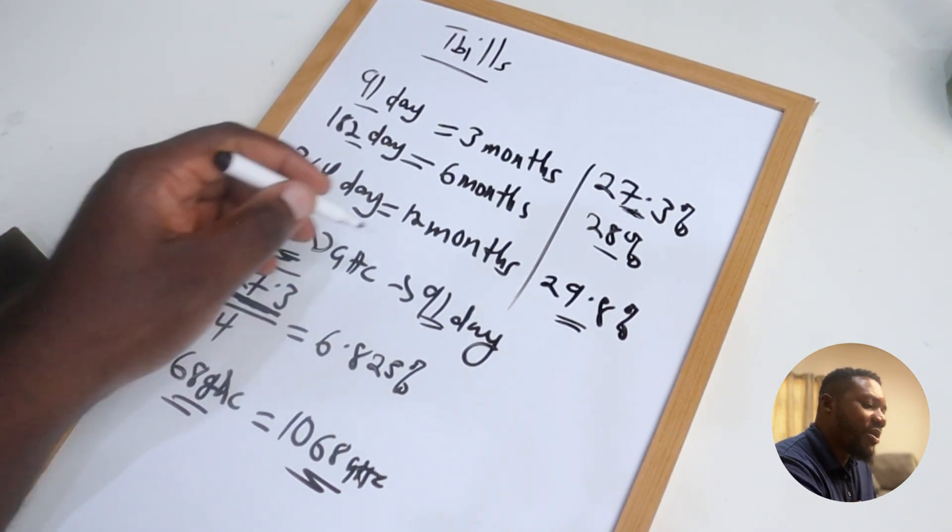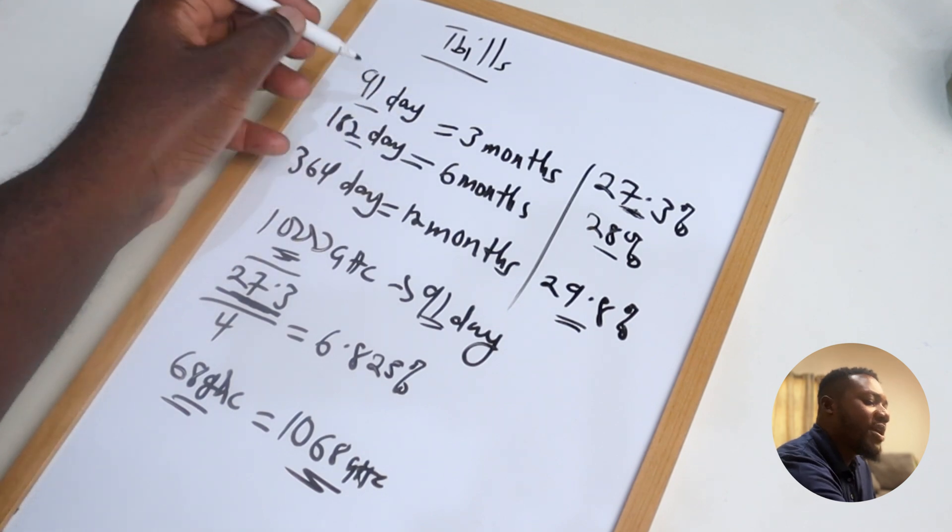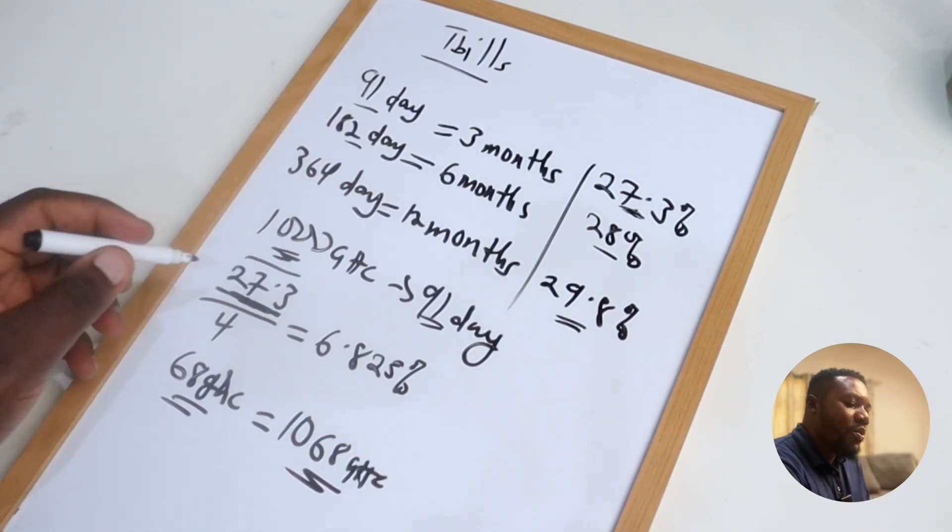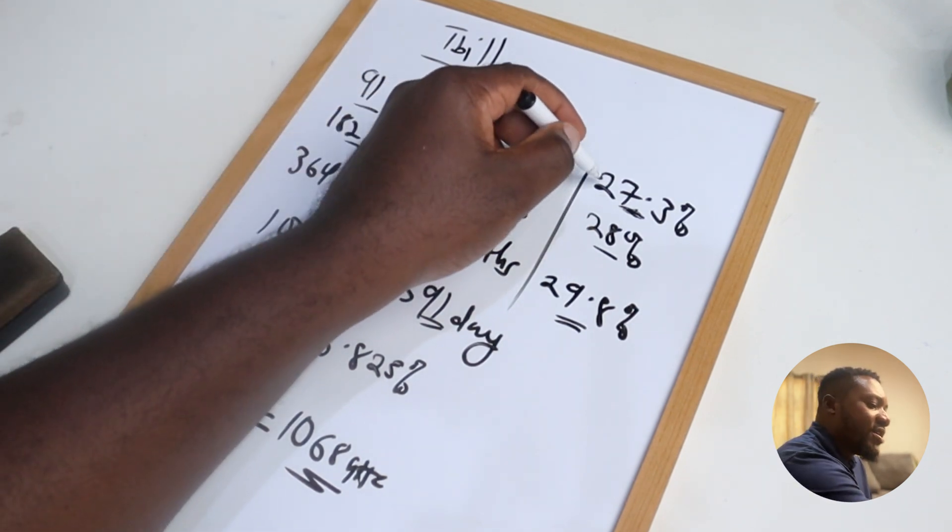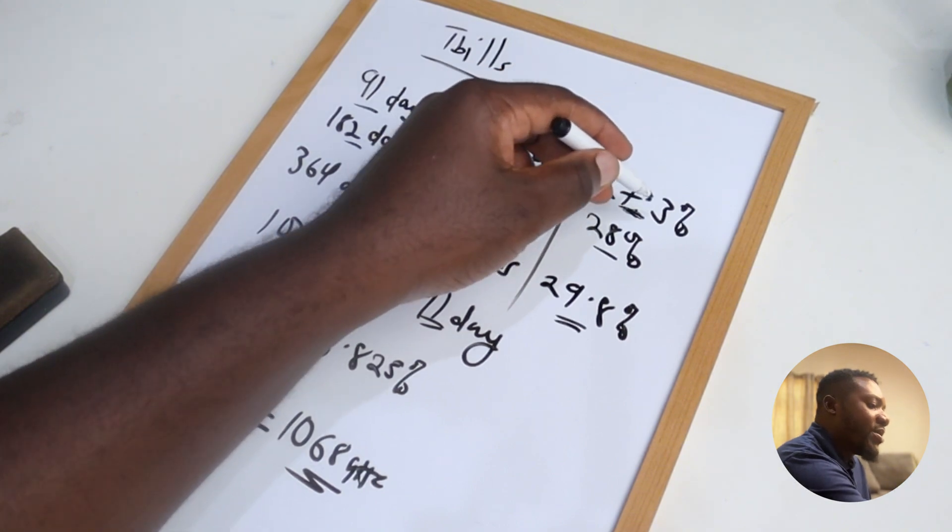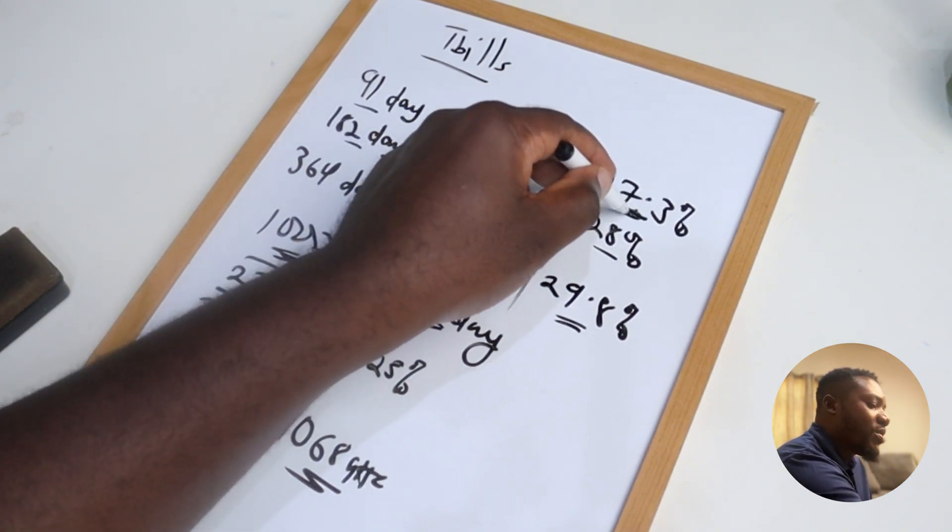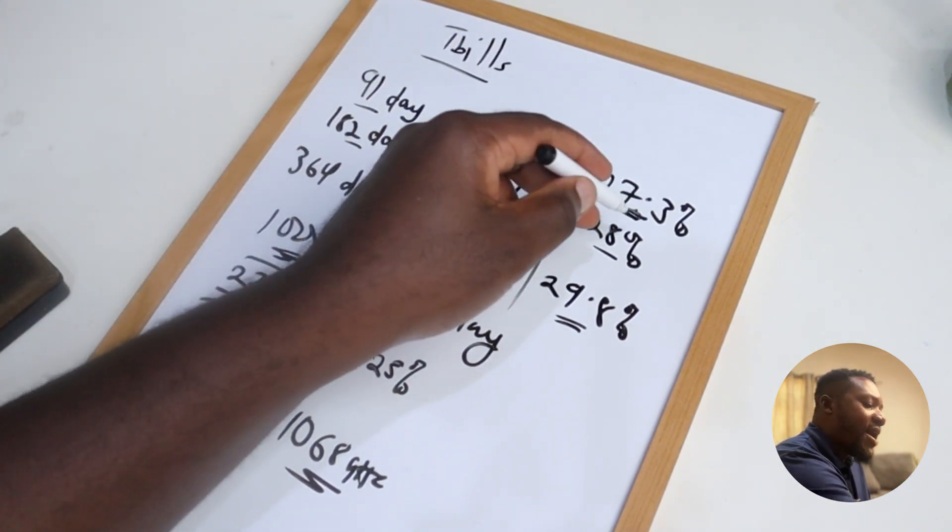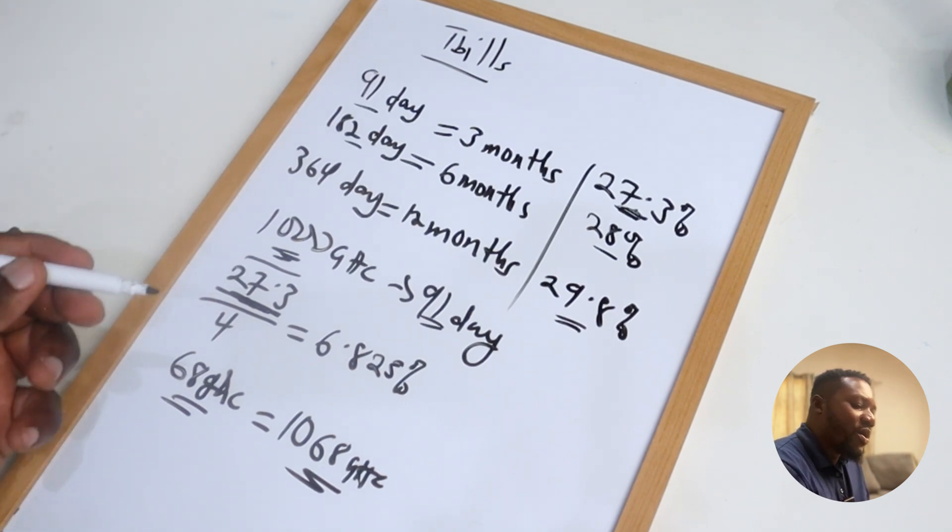Now why is it that you have to divide this 27 percent or 27.3 that they are giving for 91 day by four? Well, whenever they give you this rate, this percentage, 27.3 percent that they have here, this one, it is per annum.